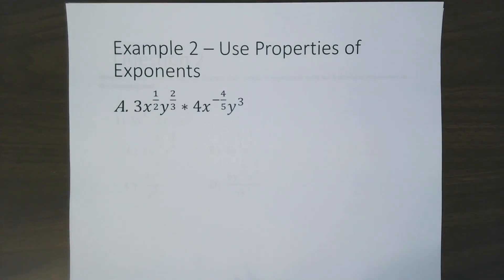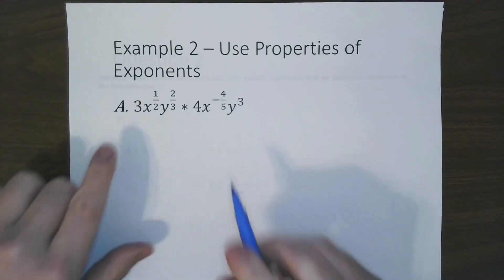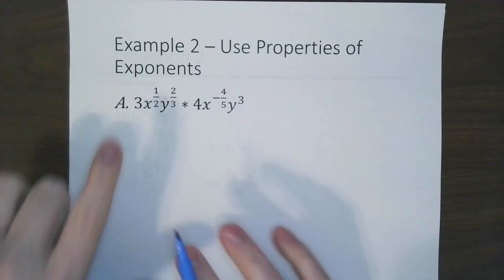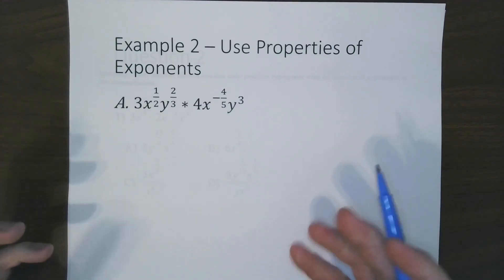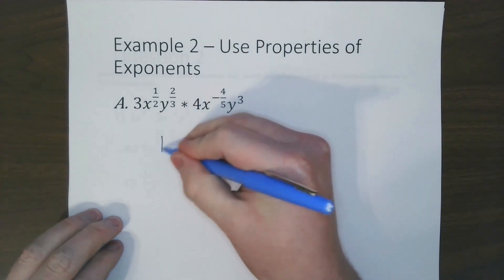For this example, let's use more of the properties to do one with two variables. So same as before, any of the coefficients, we just do like normal. So 3 times 4 is 12.